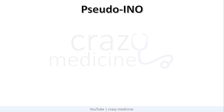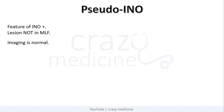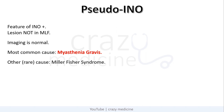Now, what is pseudo-INO? Pseudo-INO means when there is an INO-like presentation but there is no lesion in the MLF, i.e. imaging or MRI is normal. The most common cause is myasthenia gravis. There are some other rare causes as well, like Miller Fisher syndrome.